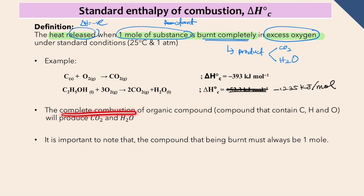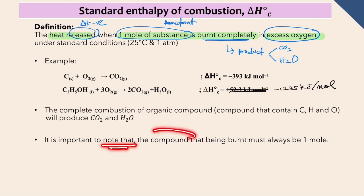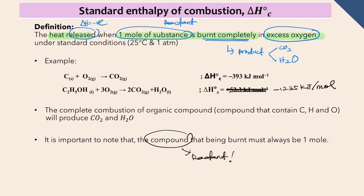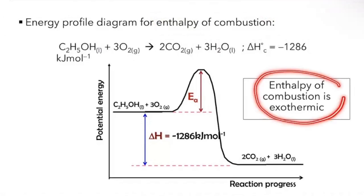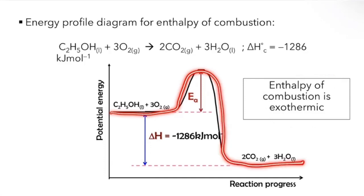For combustion of ethanol, burning ethanol in oxygen produces carbon dioxide and H2O. Ethanol must be 1 mole, and delta H = -1235 kJ/mol, meaning the combustion releases energy. For complete combustion of an organic compound (a compound containing C, H, and O), the products are carbon dioxide and water. Note that the compound being burned must always be 1 mole. Enthalpy of combustion is always exothermic and the energy profile curve will look like this.